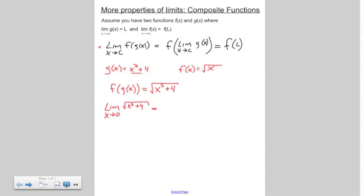All you do is plug 0 into your function, and we've got 0 squared plus 4, which is 4, and we know the square root of that is 2. So that's nice and easy. That's one way that you could do this.